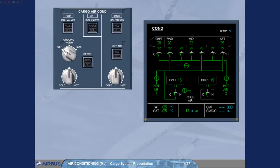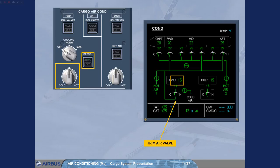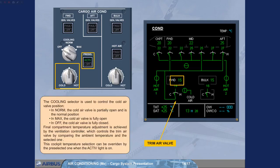Final compartment temperature adjustment is achieved by the ventilation controller, which controls the trim air valve by comparing the ambient temperature and the selected one. This cockpit temperature selection can be overridden by the pre-selected one when the active light is on.